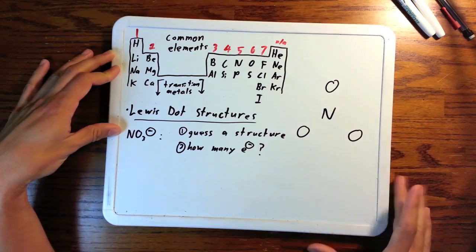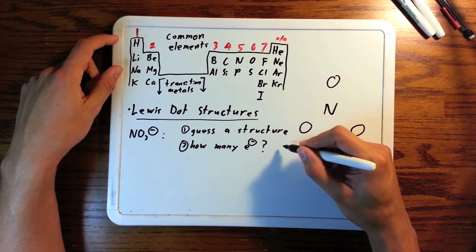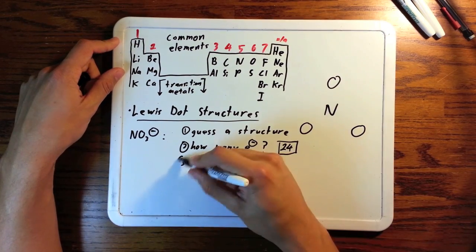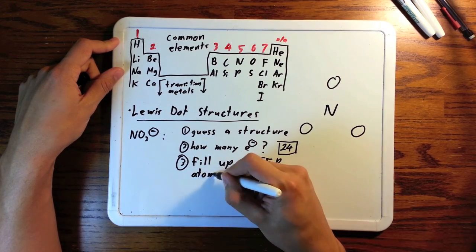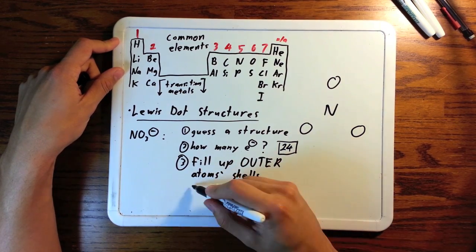Now, here's my little secret. I feel like no one ever told me this, this next part. The third thing you should do, fill up the outer atoms first. Give them all 8 electrons, 2 for hydrogen. Make them all happy. Fill them up.